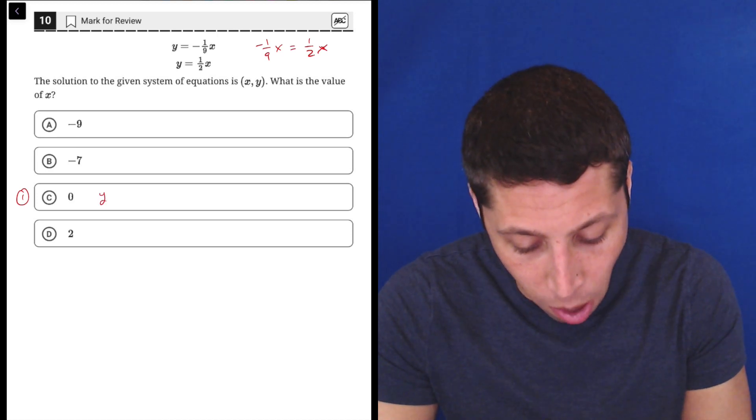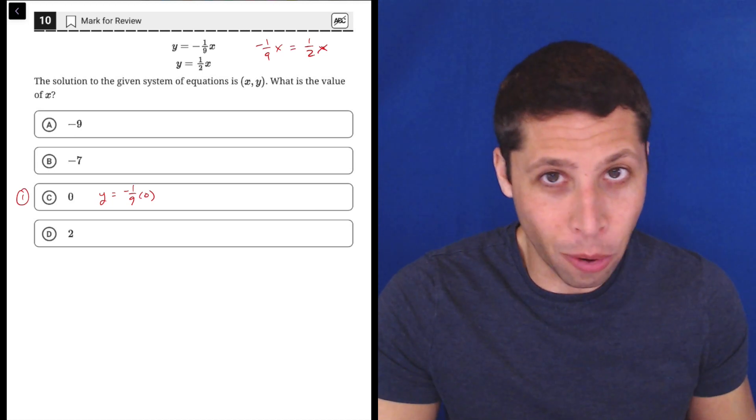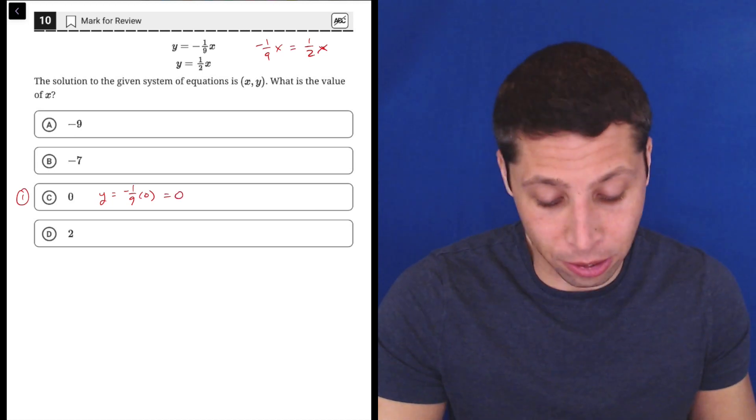So the first equation would be y is equal to negative one ninth times zero. Okay, well, zero times anything is zero, so that looks good.